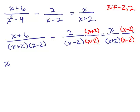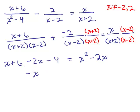So we have x plus 6 on the numerator. Now let's be careful with the minus 2 times x plus 2 — think of it as plus a negative 2 times x plus 2 — that gives negative 2x minus 4. On the right side we have x squared minus 2x. Combining like terms on the left: x minus 2x is negative x, and 6 minus 4 is 2. So we have negative x plus 2 equals x squared minus 2x.